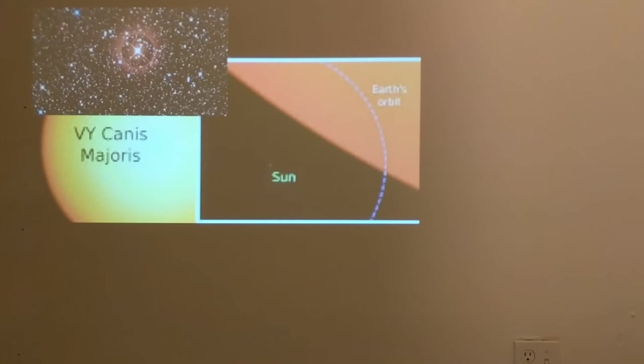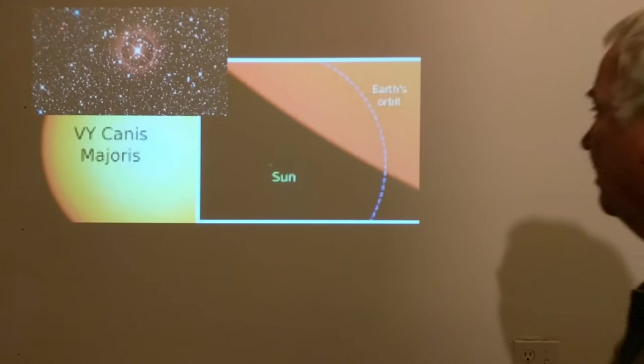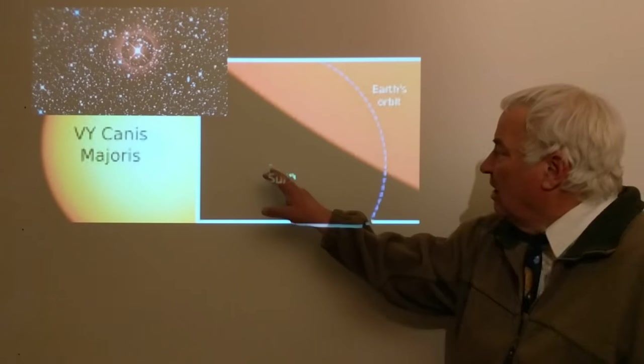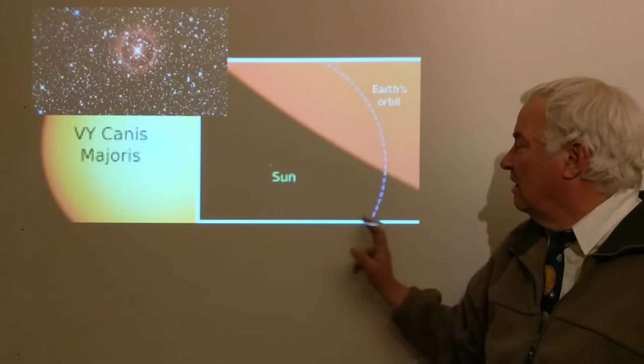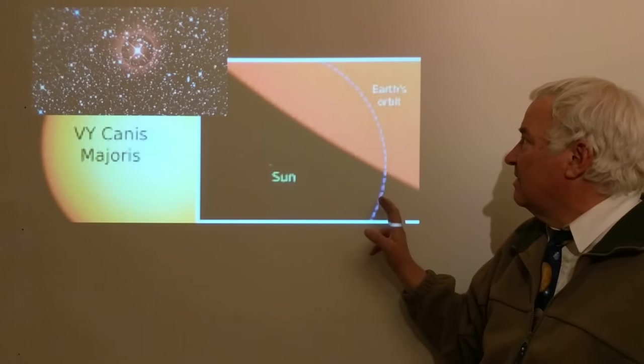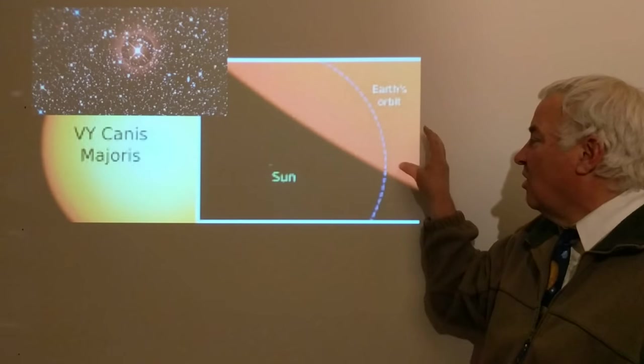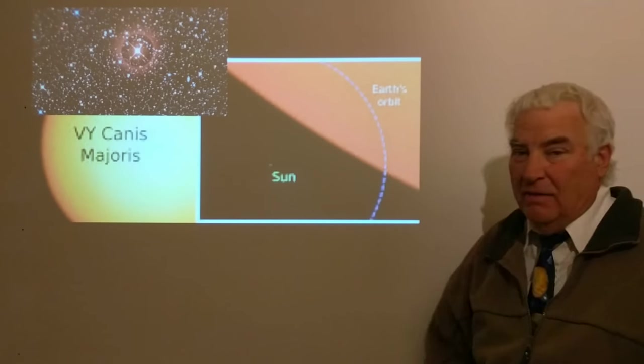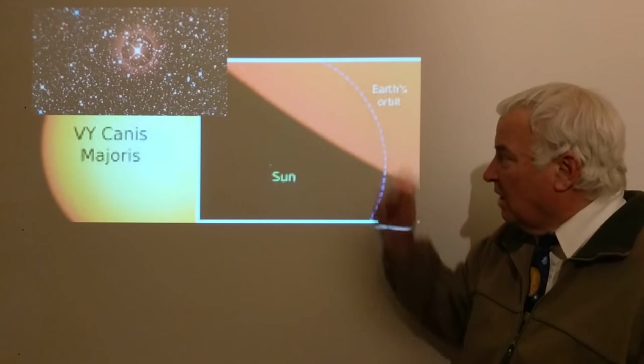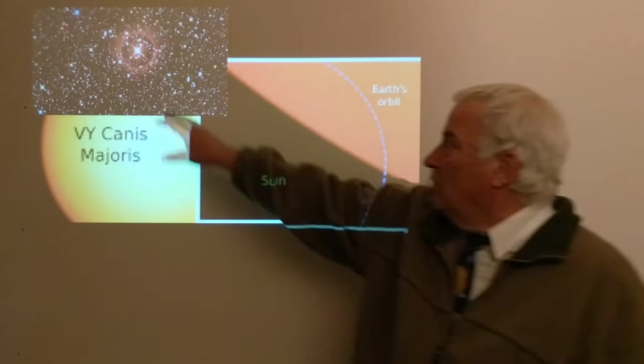To give you an idea how big these stars are, if we look at one in particular, VY Canis Majoris. If we look at the Sun and Earth's orbit around the Sun on scale with the size of the star, we see that the star is much larger than even Earth's orbit around the Sun. So this is a supergiant star. This is a visual image of it.